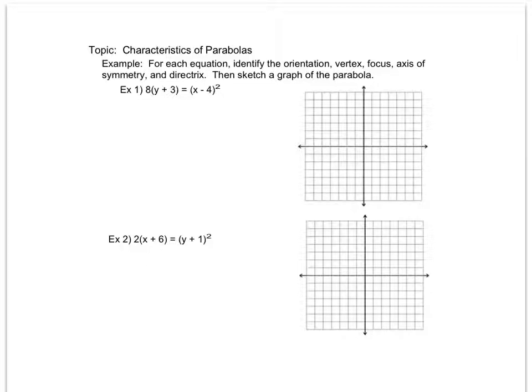Well, I notice that this is the formula where my x is squared as opposed to my y squared, so I see that this is mimicking a formula of 4p times (y - k) equals (x - h) squared.